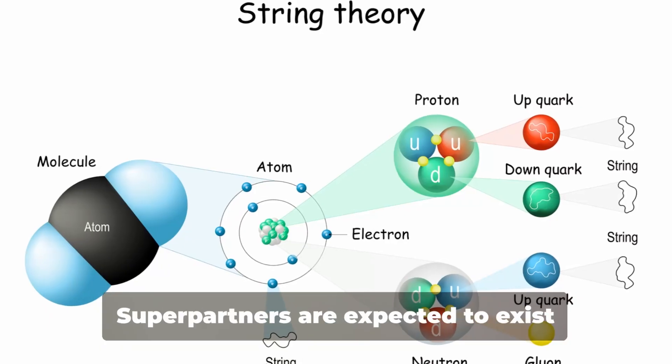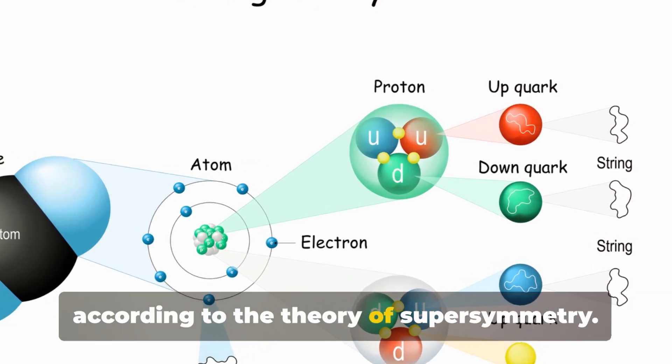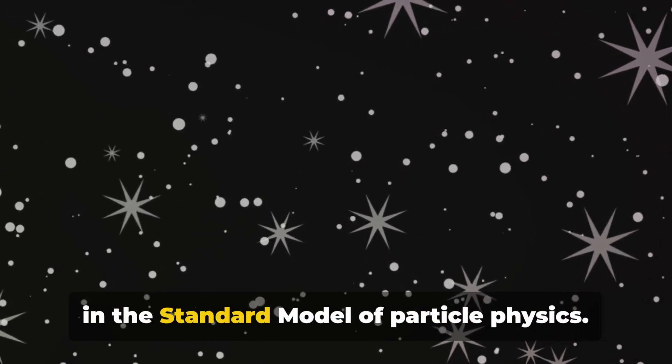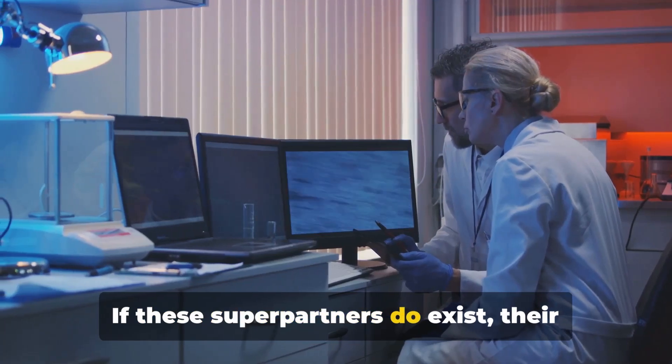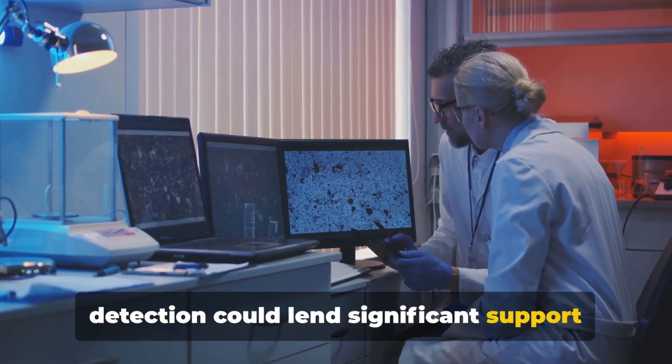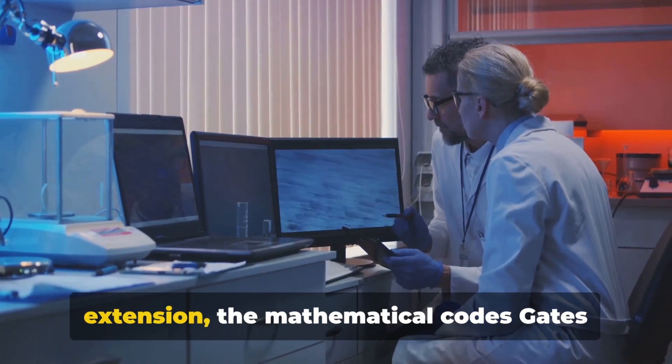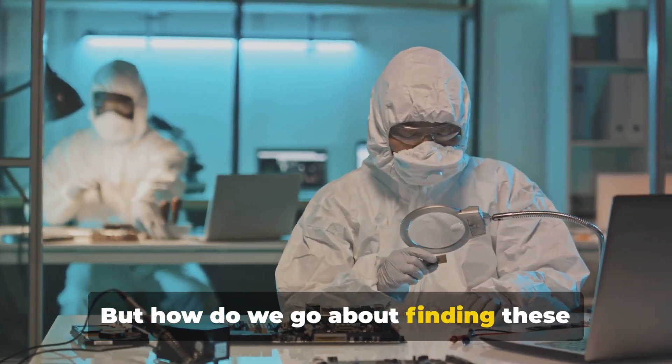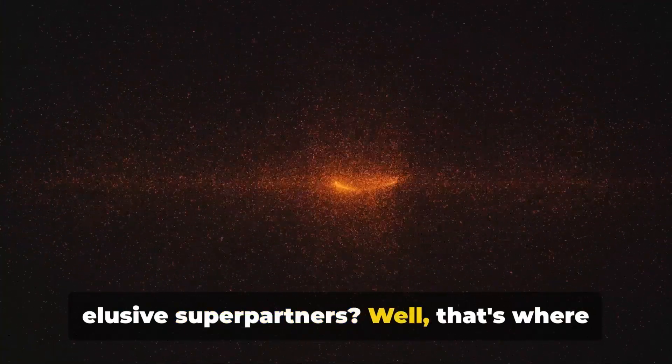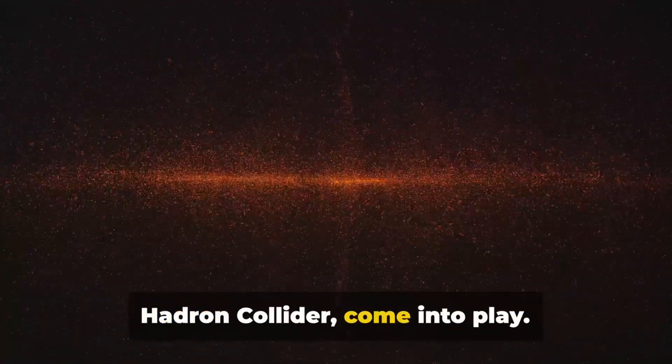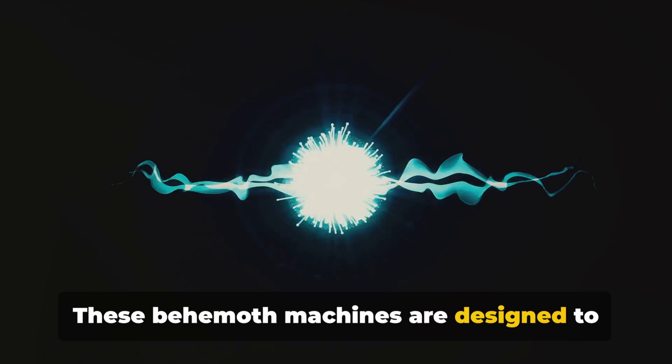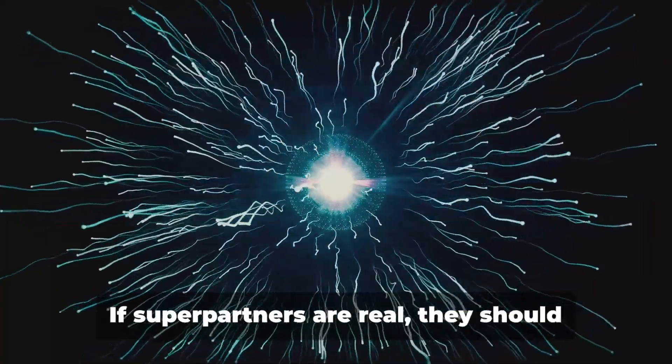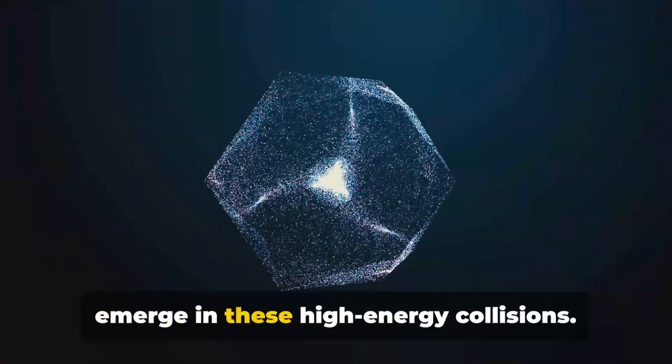Now, let's delve a bit deeper into this. Superpartners are expected to exist according to the theory of supersymmetry. They are the hypothetical counterparts to the particles we're already familiar with in the standard model of particle physics. If these superpartners do exist, their detection could lend significant support to the supersymmetry hypothesis and, by extension, the mathematical codes Gates discovered in superstring equations. But how do we go about finding these elusive superpartners? Well, that's where particle accelerators like the Large Hadron Collider come into play. These behemoth machines are designed to smash particles together at nearly the speed of light, creating an array of exotic particles in the aftermath. If superpartners are real, they should emerge in these high-energy collisions.